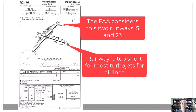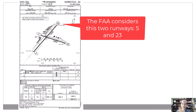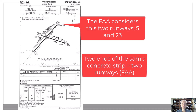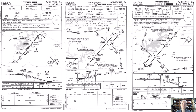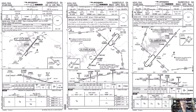The FAA has made letters of interpretation stating that two different ends of the same piece of concrete are two different runways, as long as the wind doesn't prohibit landing on them. Today we're pretending the wind is calm. So what I tell dispatchers to do at this point, once I've got my approaches pulled up, is evaluate those approaches with a table.